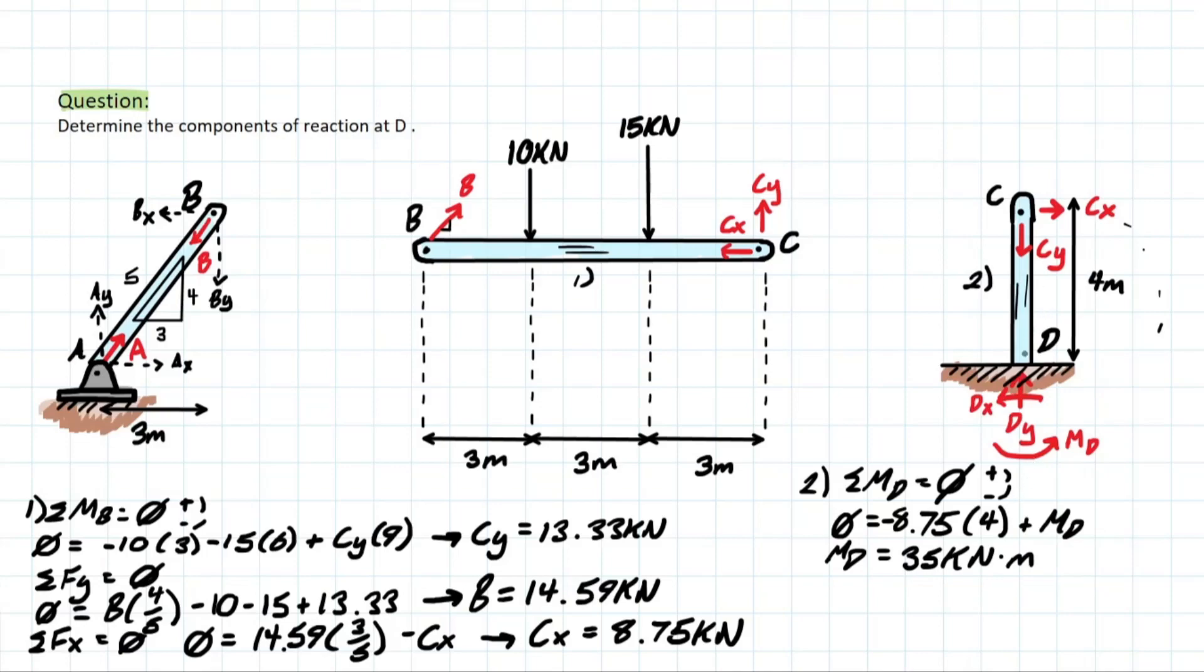And since we know to keep this in equilibrium, D-X will have to be equal to C-X, just in the opposite direction. And D-Y will have to equal to C-Y, which is equal in opposite direction. So based on what I've drawn here, the sign is going to be right. D-Y is equal to C-Y, which is equal to 13.33. And similarly, D-X is equal to C-X, which is 8.75. All right, that's it for the problem. There are your reactions at D. And I hope it helped.